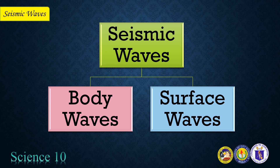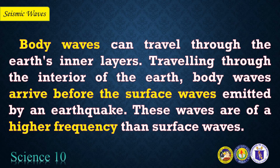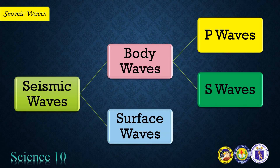There are two types of seismic waves: body waves and surface waves. Body waves can travel through the Earth's inner layers. Traveling through the interior of the Earth, body waves arrive before the surface waves emitted by an earthquake. These waves are of a higher frequency than surface waves. There are two types of body waves: P waves and S waves.